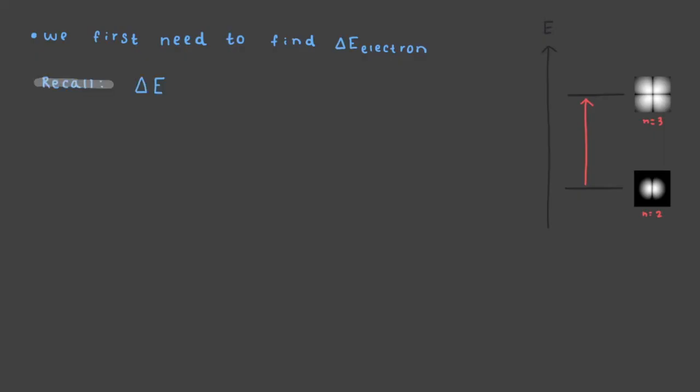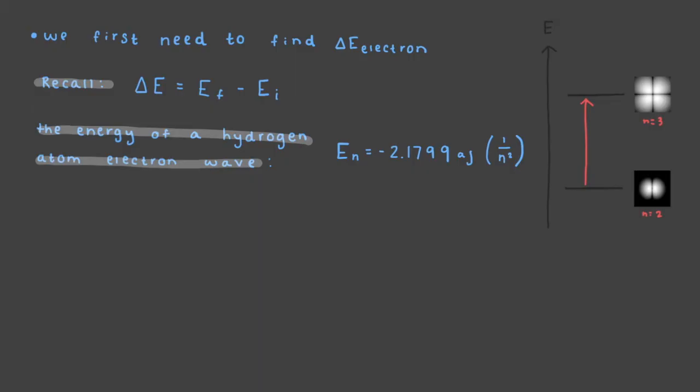Recall, all energy changes are represented by E final minus E initial, and we know that the energy of a hydrogen atom electron wave is given by the formula E sub n is equal to negative 2.1799 attojoules times 1 over n squared.